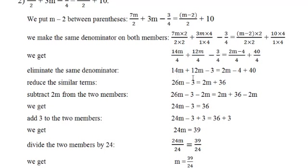Eliminate the same denominator. We get 14m plus 12m minus 3 equal to 2m minus 4 plus 40. Then reduce the similar terms: 26m minus 3 equal to 2m plus 36. Now subtract 2m from both members to remove 2m. We get 24m minus 3 equal to 36.